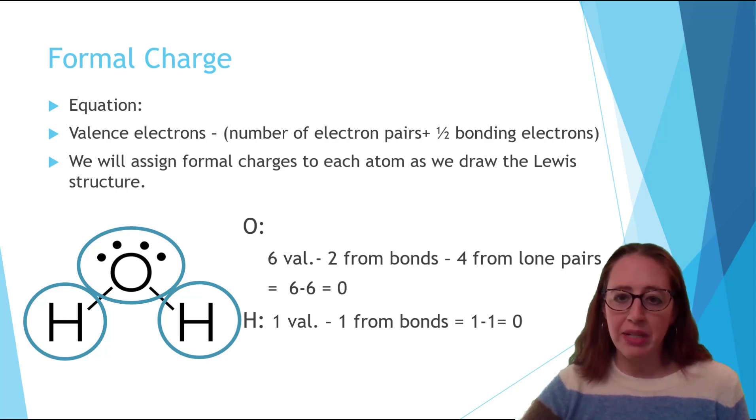This is the charge that the atom would have if all of the electrons in the bonds were shared equally. It is determined by taking the electrons that the atom owns within a molecule and subtracting that number from the original valence electrons. The original valence electrons we find from the periodic table.